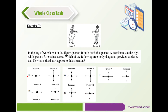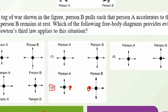Exercise 7: in a tug of war, person B pulls such that person A accelerates to the right while person B remains at rest. Person B's forces are balanced, while person A has balanced vertical forces and unbalanced horizontal forces to the right. The correct FBD is D: the rope tension on A equals the rope tension on B by Newton's Third Law, vertical forces are balanced on each person, and the net horizontal force on A is to the right because she is accelerating.